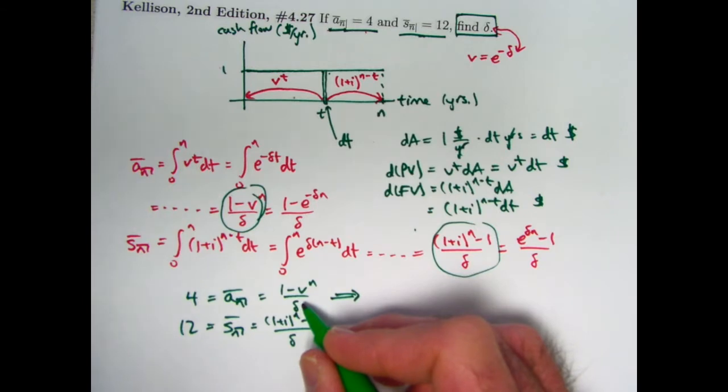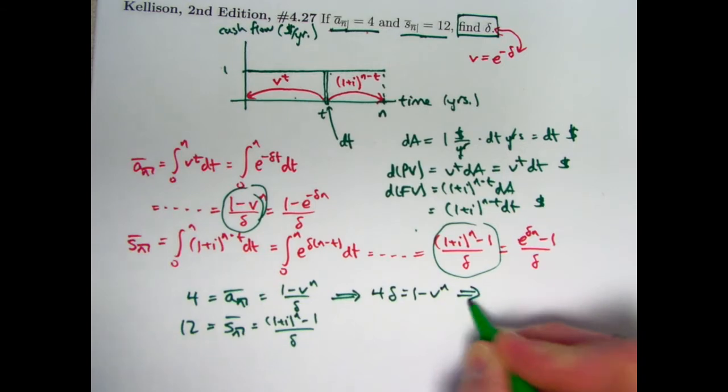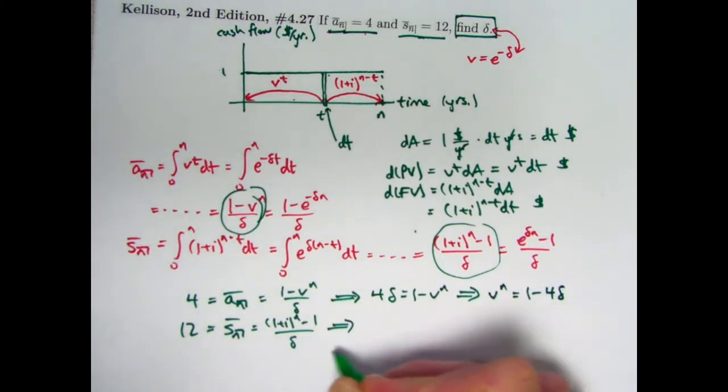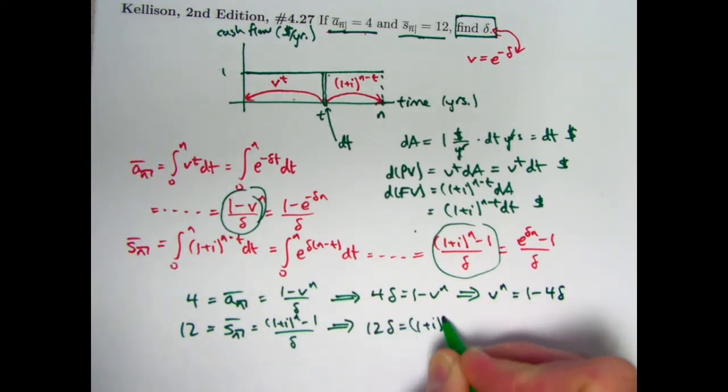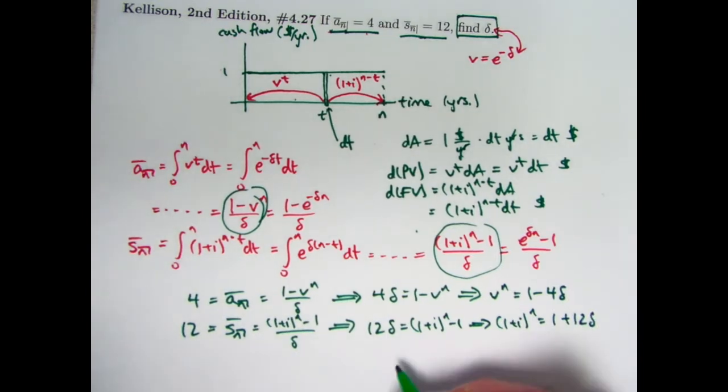It turns out a better thing to do is to solve this equation for v to the n and solve this equation for 1 plus i to the n, and then use the relationship between v to the n and 1 plus i to the n to relate to get an equation that only involves delta. So multiply both sides of this equation by delta gives 4 delta is 1 minus v to the n. Subtract 4 delta from both sides and add v to the n to both sides and you'll get v to the n is 1 minus 4 delta. Solve this equation first by multiplying both sides by delta to get 12 delta is 1 plus i to the n minus 1, and therefore 1 plus i to the n would equal 1 plus 12 delta. But v is the reciprocal of 1 plus i, and therefore v to the n is the reciprocal of 1 plus i to the n.